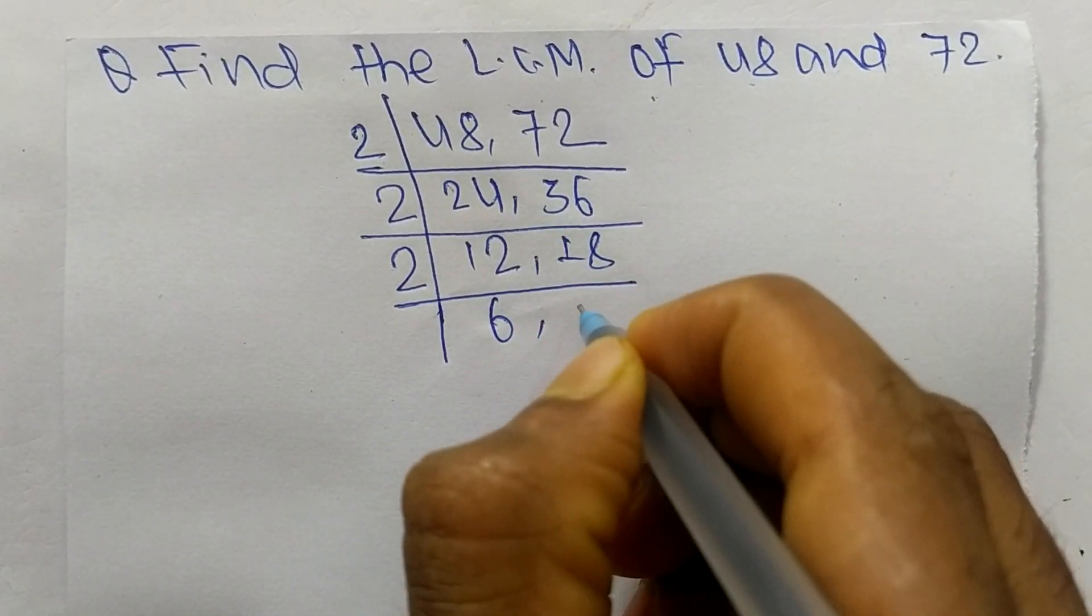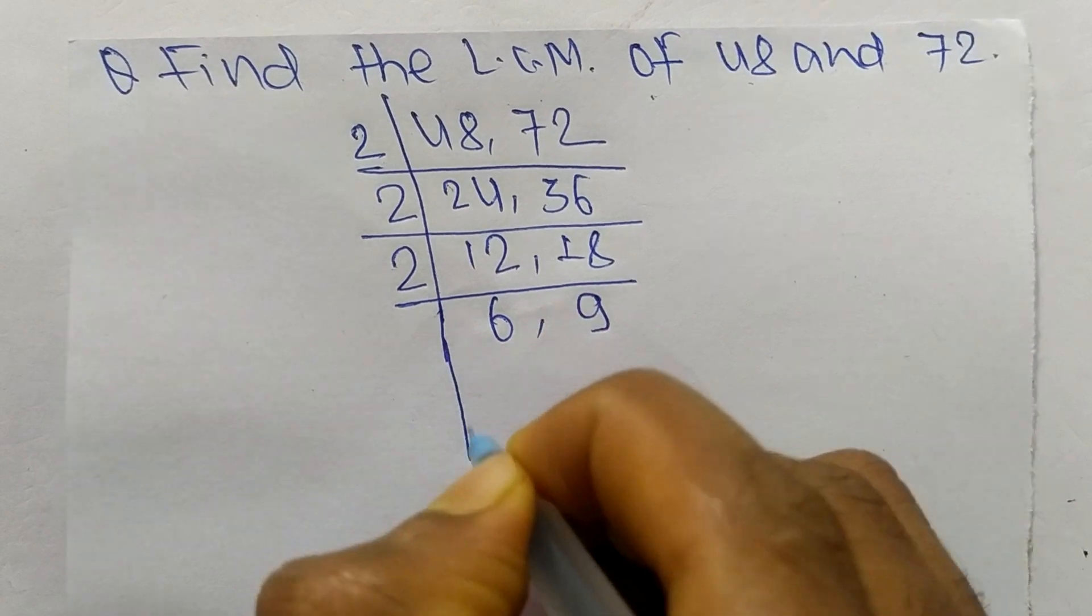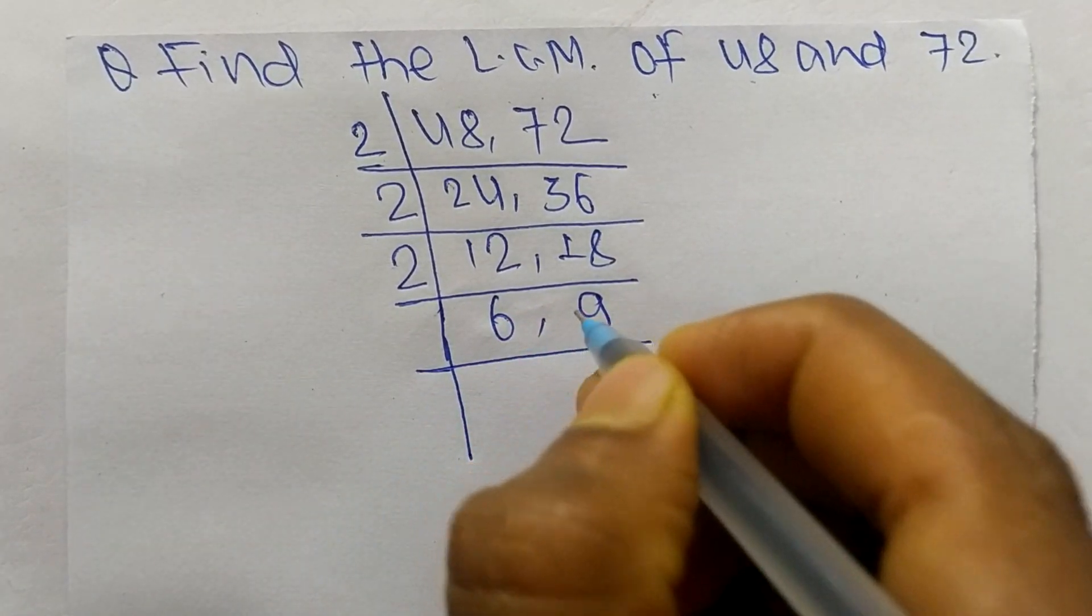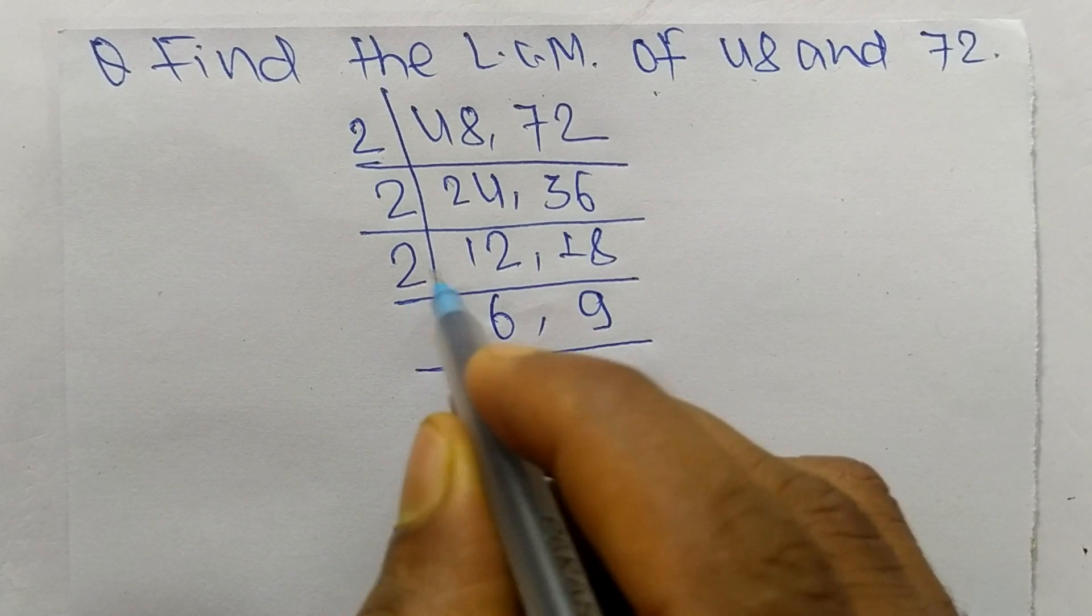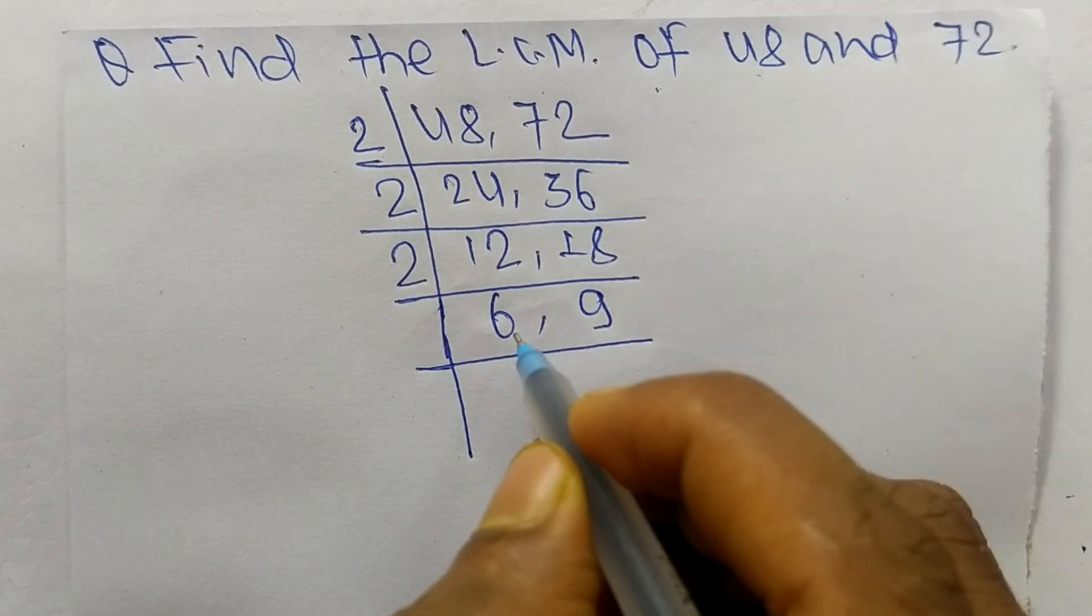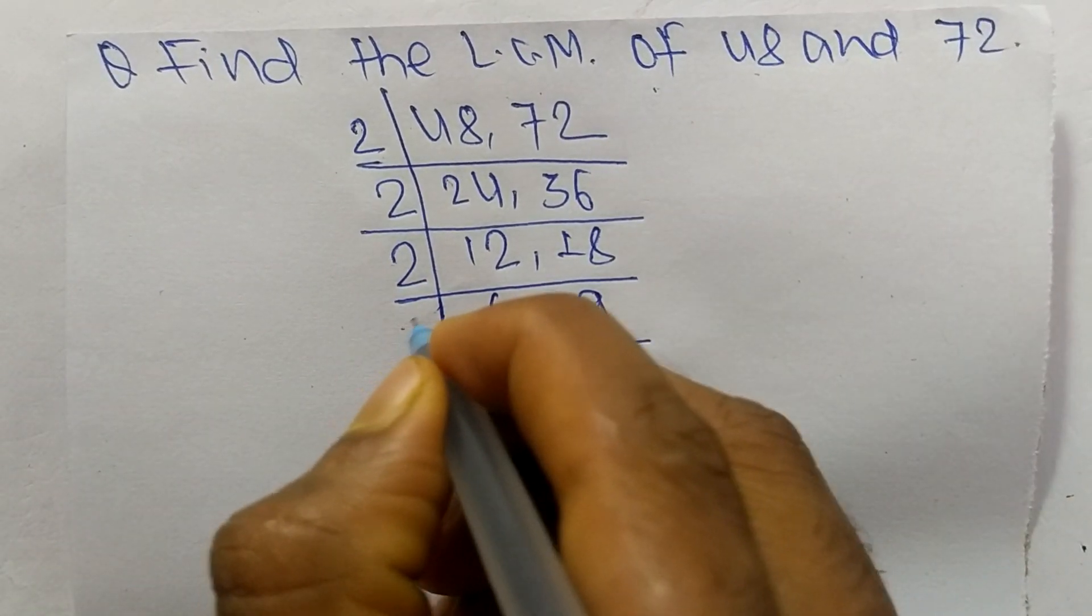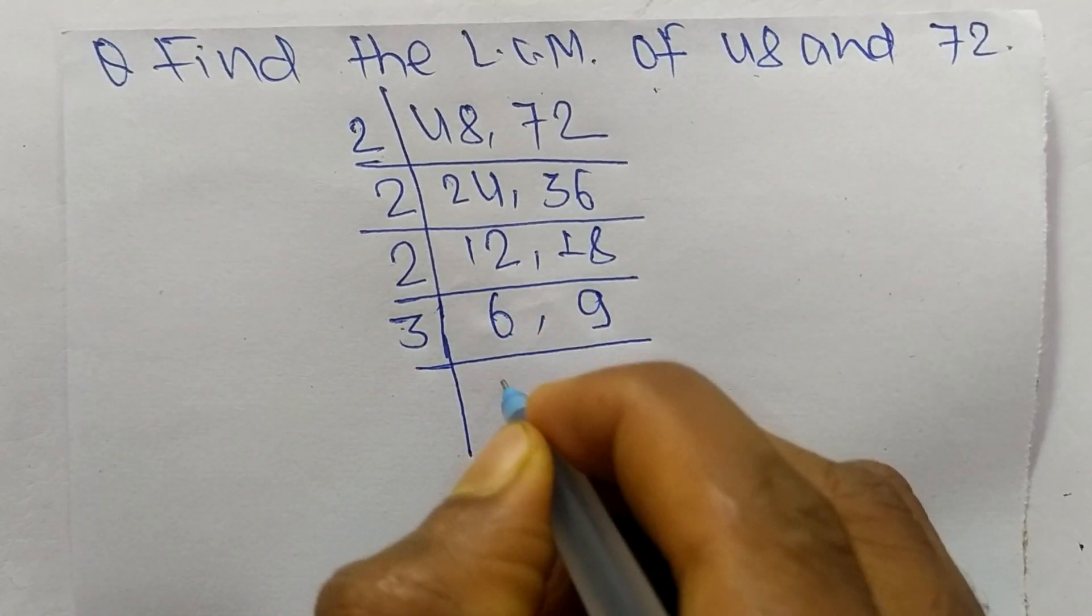Again these both are divisible by 2, so 2 times 6 means 12, 2 times 9 means 18. Now these both numbers are not divisible by 2, so we take the number greater than 2 that can divide 6 and 9. So the number is 3.